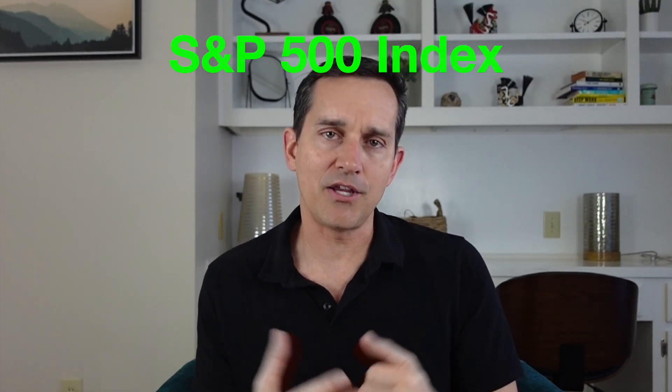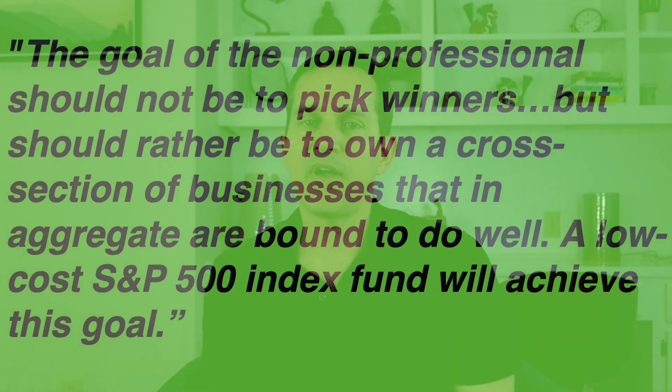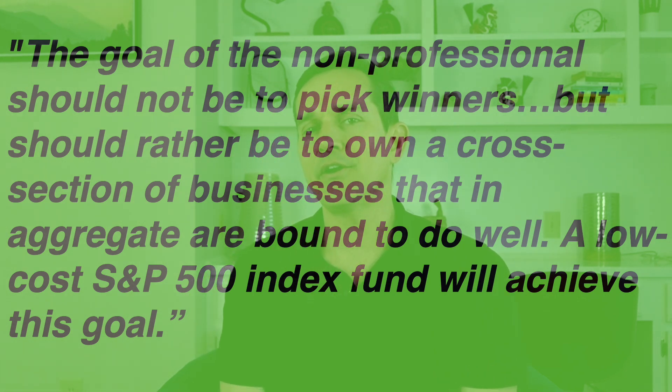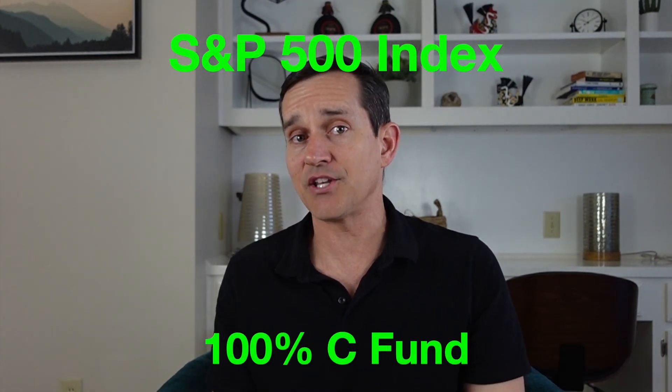This is the asset allocation I used right out of high school. The idea is simply investing in the S&P 500 index fund. This strategy is based on a letter from none other than Warren Buffett to his shareholders in 2013. Slightly paraphrased, he says the goal of the non-professional should not be to pick winners, but should rather be to own a cross-section of businesses that in the aggregate are bound to do well. A low-cost S&P 500 index fund will achieve this goal. The C fund in the TSP mimics the S&P 500 index, so all you need is 100% C fund to accomplish this strategy.